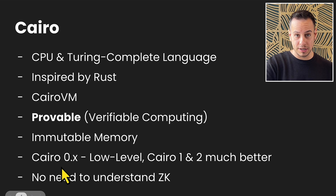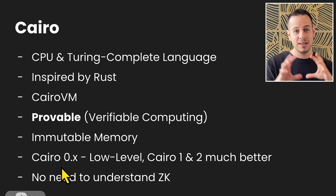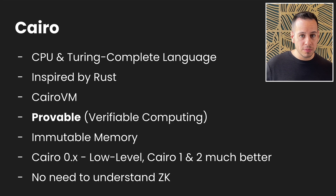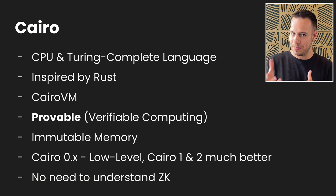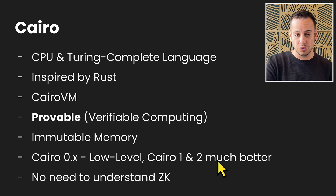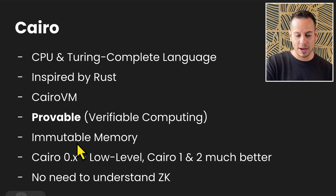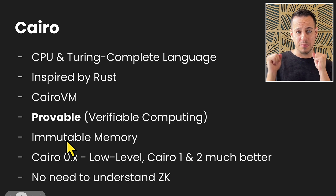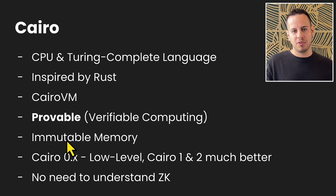This was the story in Cairo zero, the previous version. But the StarkNet and Cairo developers wrapped it for us and made it possible to create mutable variables — they are not really mutable under the hood, just wrapping and creating new variables in memory. We do have mutable variables in Cairo 1 and Cairo 2, which is much better than the previous Cairo zero language.